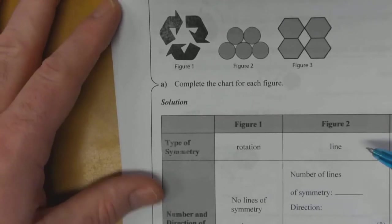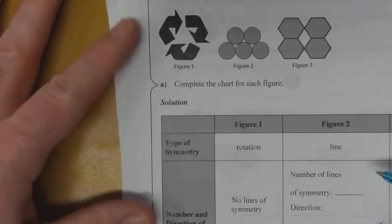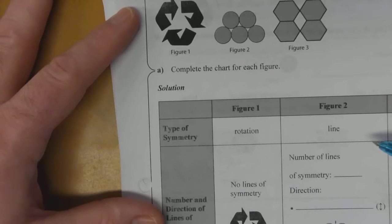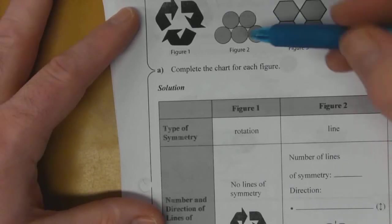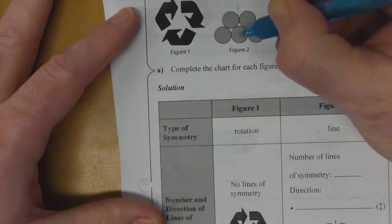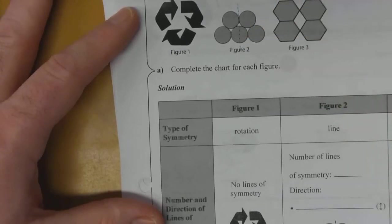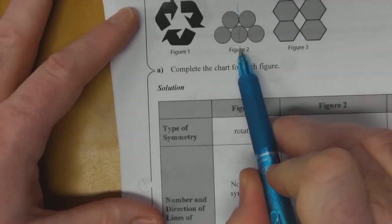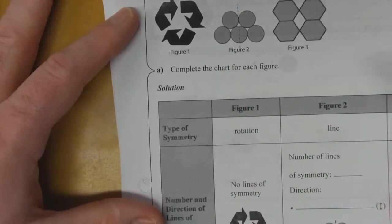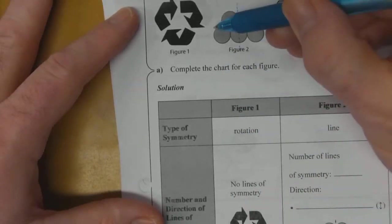So there's no rotational symmetry in this case. Let's look at our lines of symmetry. We can cut it in half that way with a vertical line of symmetry, and both halves do match.